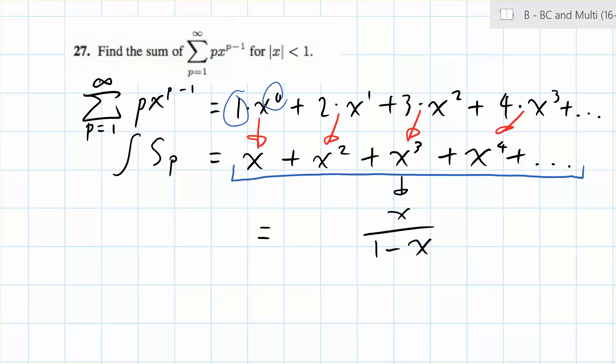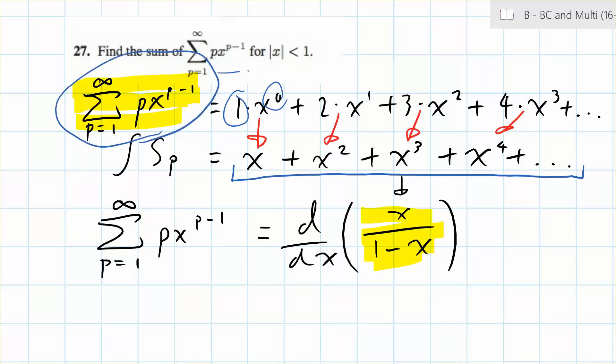Now, by reversing our steps, we can realize that this summation is equal to the derivative of this function right here. This makes sense because we took the integral of this to find this series right here. So now we reverse it and find the derivative of this and set it equal to just the summation right here.